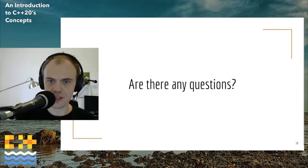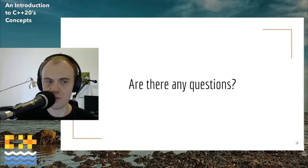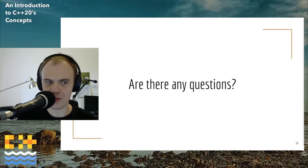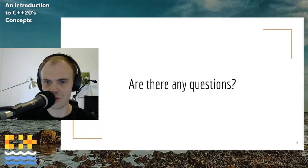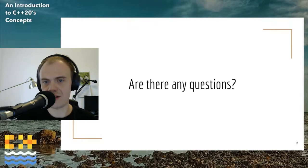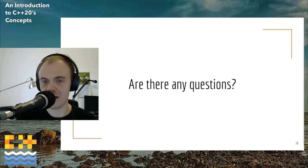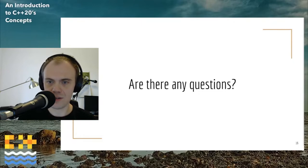There are two questions from the chat. First: what are the advantages of concepts versus static asserting inside the method? If we static assert inside the function body, we hide the requirement — the user has to look inside the function body to see what the requirements are. With concepts we put it right where we write down our template. Second: can we create our own constraint concepts combining other existing ones? Yes, and this will be one of the next topics in the talk.